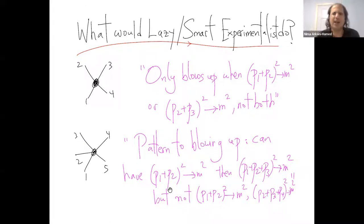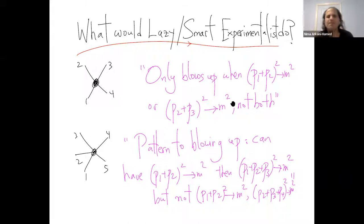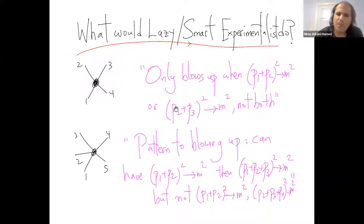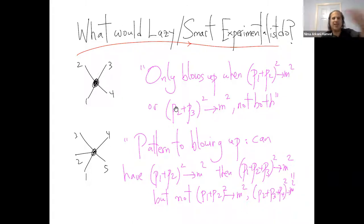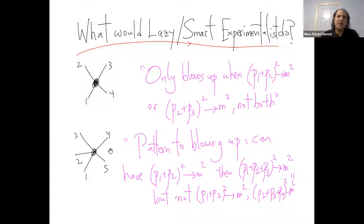The hero of my story is a lazy and smart experimentalist who says: I don't want to do any detailed measurements. I'm excited by the fact that the amplitude blows up, and having made it blow up, I want to see if I can make it blow up more. For four points it blows up when p1 plus p2 squared goes to m squared, but then you can't make it blow up any further. At five particles, you can make p1 plus p2 squared go to m squared and then also p1 plus p2 plus p3 squared go to m squared — that's a double pole.